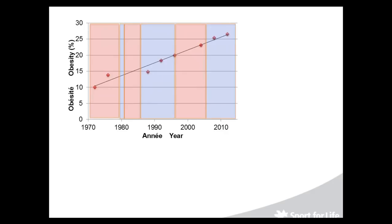This graph gives an example from Canada showing the increase in obesity in our population. In 1970, about 10 percent of our population was obese. By 2010 to 2012, that line had risen to 27 percent. So what do we need to do to change that trajectory and potentially bring it back down?